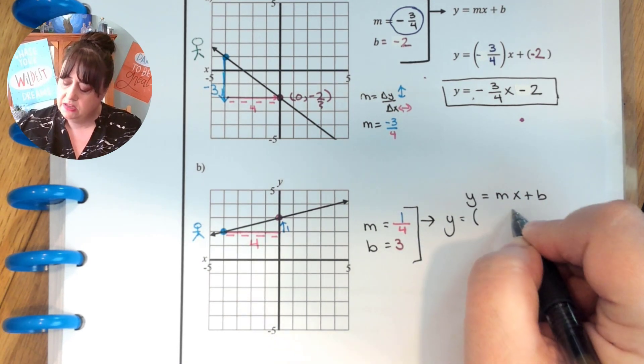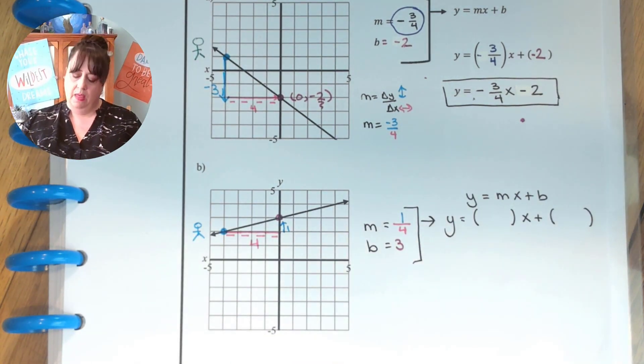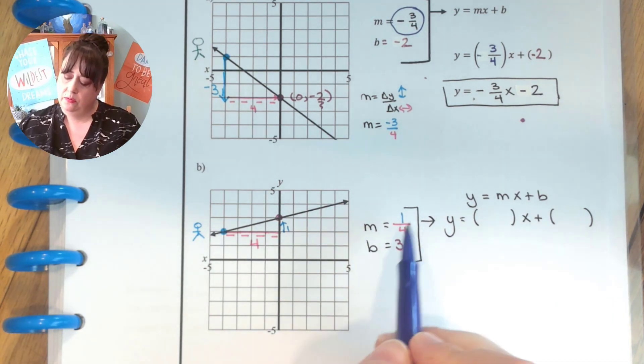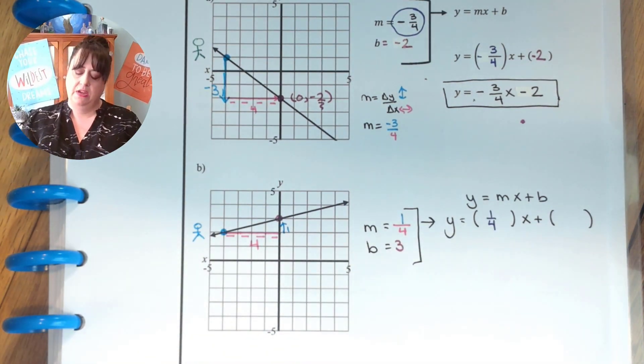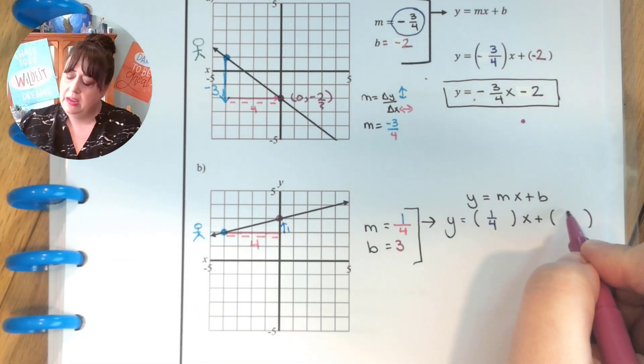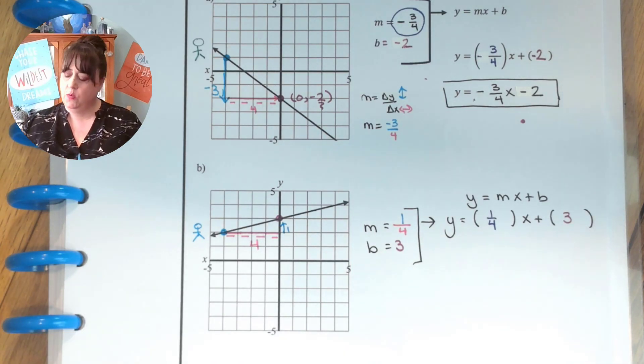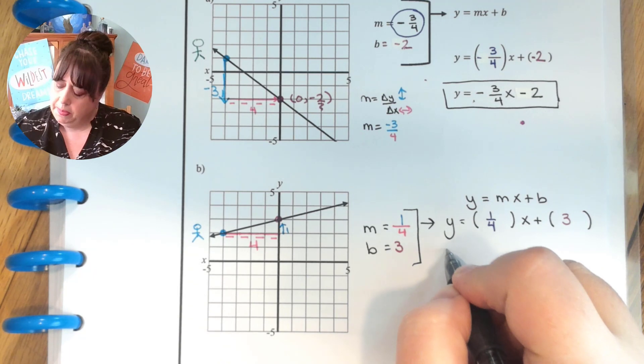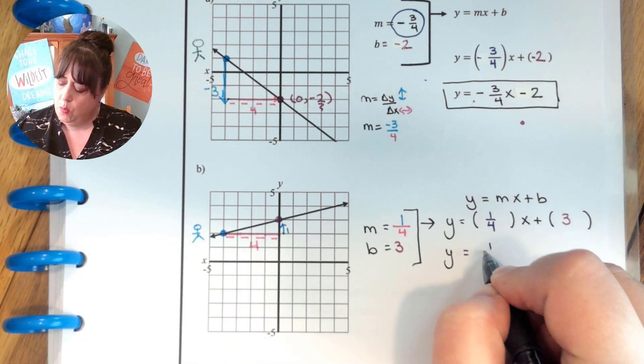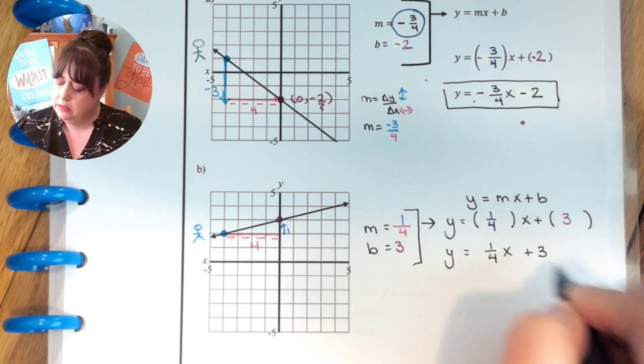So I'm putting those into that. So the y stays. The m has to change and the b has to change. The m changes to 1 over 4. The b changes to a 3. Let's clean that up. Let's get rid of the parentheses. And we get y equals 1 over 4 x plus 3.